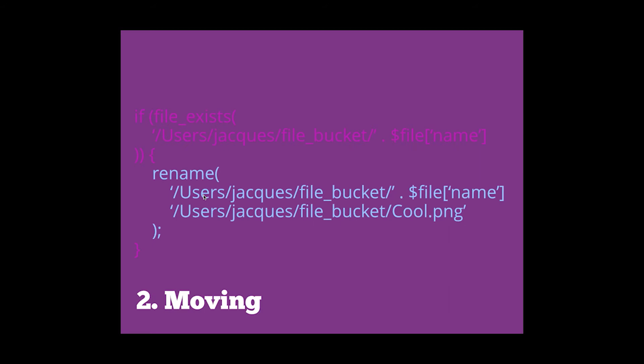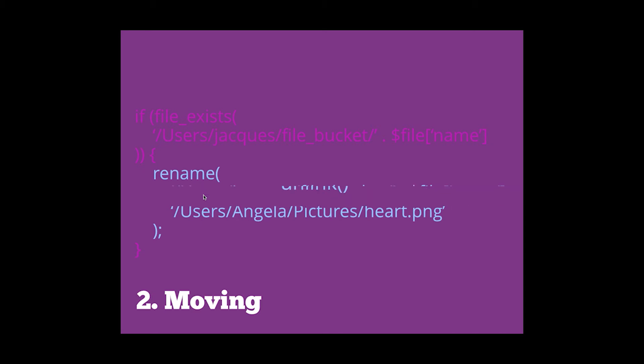rename() is another method for both moving files and renaming a file. Following the same input structure, you've got the first argument being the existing file path and the next being the file path you want to change it to. A rename is kind of like the MV command in Bash. You've got the file name for where it is now, and then the destination. You can also change the directory using rename, making it work as a move method as well.